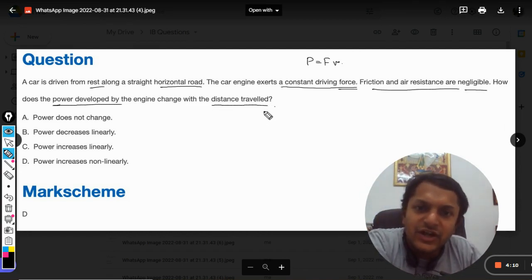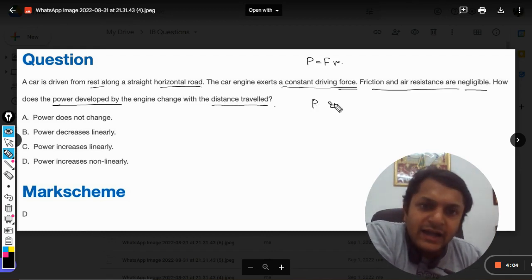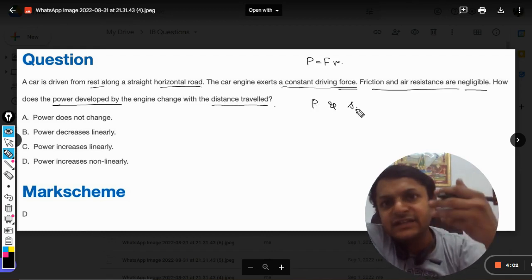How does the power developed by the engine change with the distance traveled? We need to find a relation between the power and s, that is the displacement.